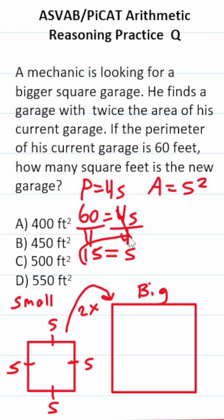Now we can get the area of his current garage by plugging in 15 for s. This becomes 15 squared. 15 times 15 is 225. The area of his current garage is 225 square feet.